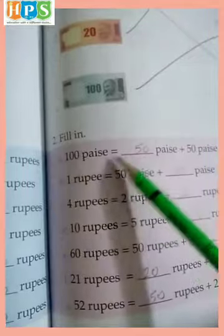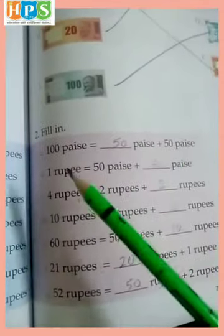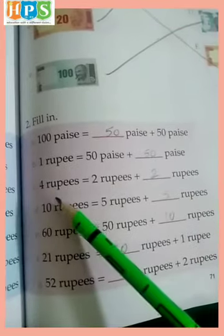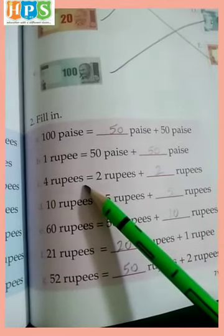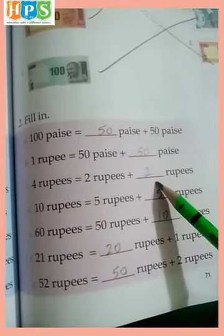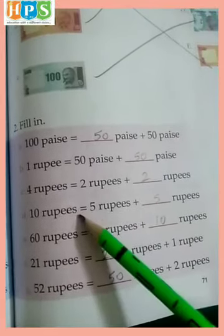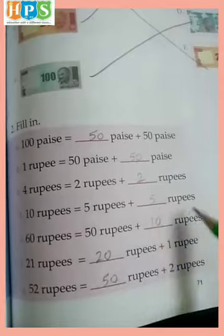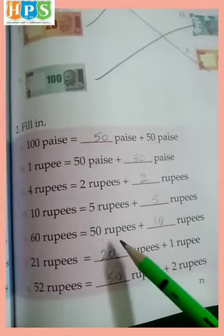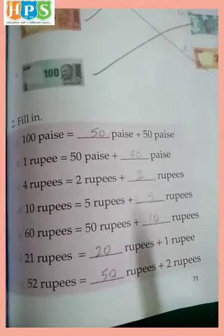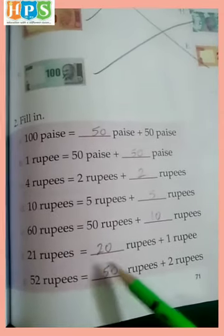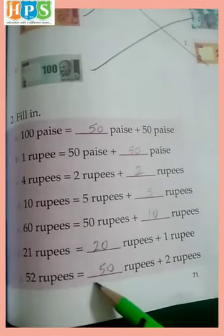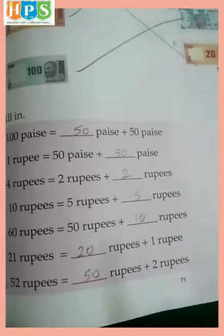Fill in: 100 paise is equal to 50 paise plus 50 paise. 1 rupee is equal to 50 paise plus 50 paise. 4 rupees is equal to 2 rupees plus 2 rupees. 10 rupees is equal to 5 rupees plus 5 rupees. 60 rupees is equal to 50 rupees plus 10 rupees. 21 rupees is equal to 20 rupees plus 1 rupee. 52 rupees is equal to 50 rupees plus 2 rupees.